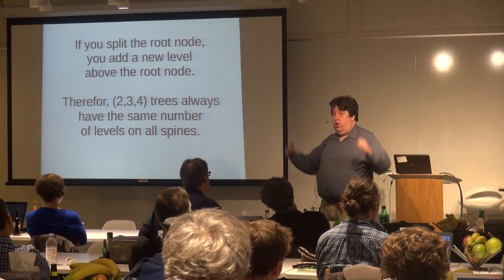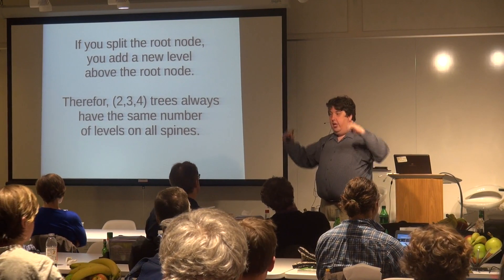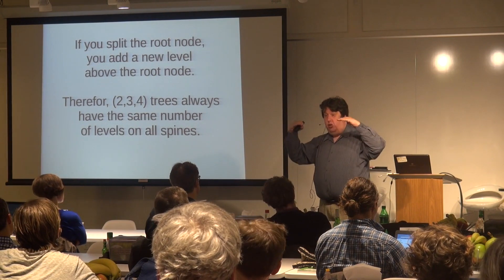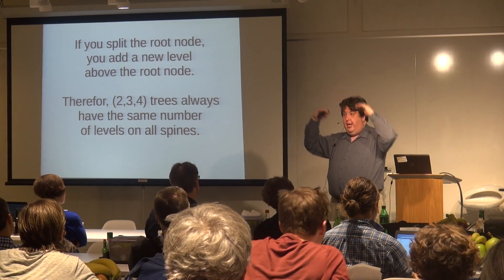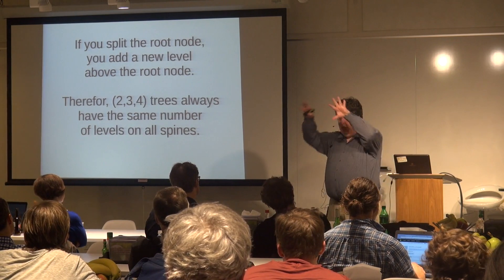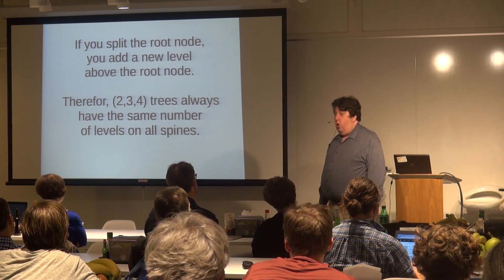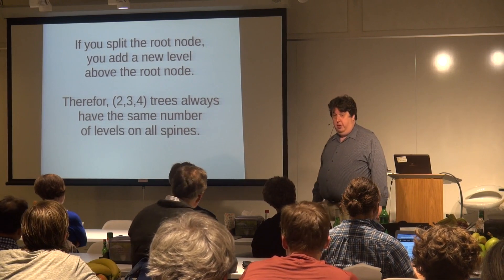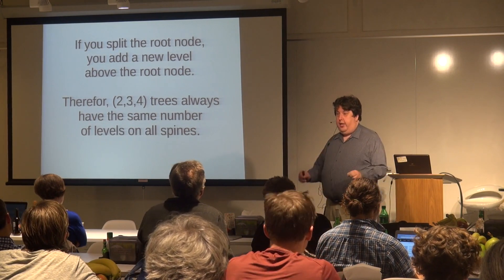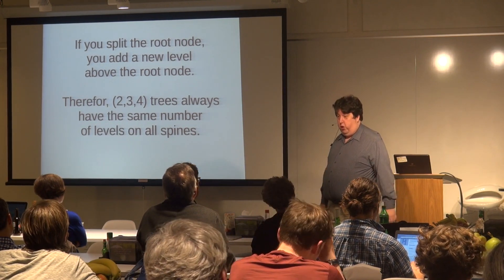When splitting: if you get all the way to the root node and have to split it, that's where you add a whole new level to the tree — a two-node at the top, which automatically pushes everything in the tree down an equal amount. So there's always the same number of nodes between your root and any leaf — it's just a question of whether there are two, three, or four nodes at each level.